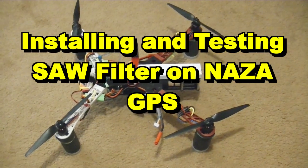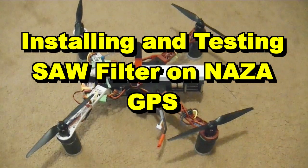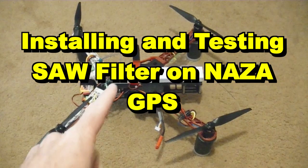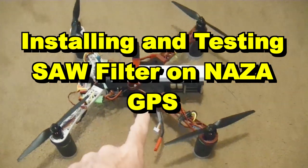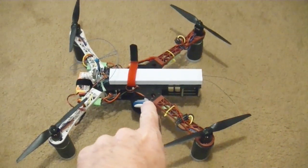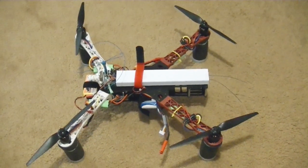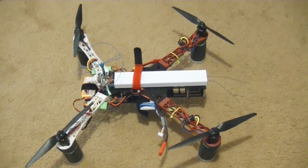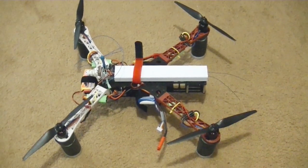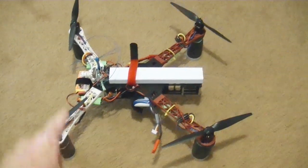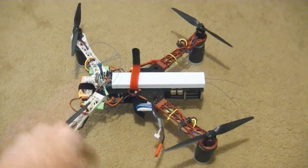Well, since the DJI NAZA-M Lite didn't pick up enough satellites on this quadcopter, I took the GPS off and we're going to put a SAW filter on it. That's supposed to be like a bandpass filter that will block out the signals from the 1.3 gigahertz transmitter over here and allow it to pick up satellites without interference.